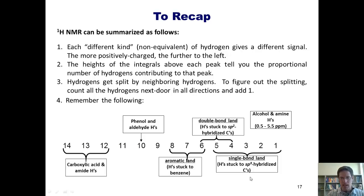Remember the following. Single bond land, 1 to 5 ppm, hydrogens stuck to sp3 hybridized carbons. Double bond land, 4 to 6 ppm, hydrogens stuck to sp2 hybridized carbons, specifically carbons double bonded to other carbons. Aromatic land, hydrogen stuck to benzene or other aromatic rings. Right around 10, phenol and aldehyde hydrogens. 12 to 14, carboxylic acid hydrogens and sometimes amides. 0.5 to 5.5 ppm, alcohols and amine hydrogens.